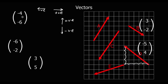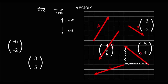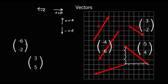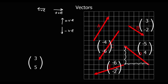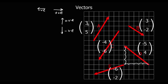Minus four, minus six — that's four left, six down — so that's C. Minus six, minus two — that's six to the left and two down — so that's E. And the one left, which is three to the right and five up, must be A.